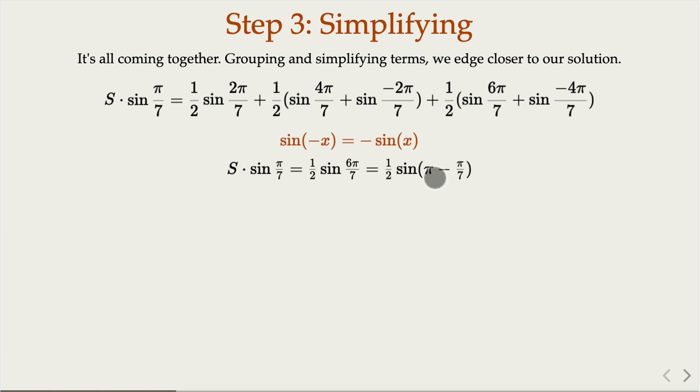Now 6pi over 7 is equal pi minus pi over 7. And we use another identity which is sine pi minus x equals sine x. If two numbers add up to pi, the sine values are the same. Which means we're going to cancel this on both sides, right? They're equal to each other. And when we left with s, which is the sum we're looking for, is equal to one half.